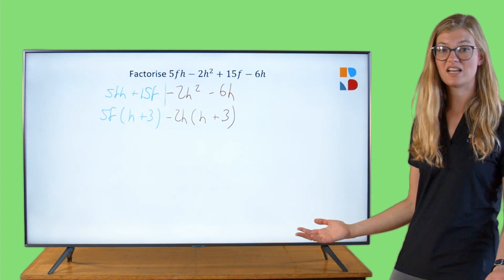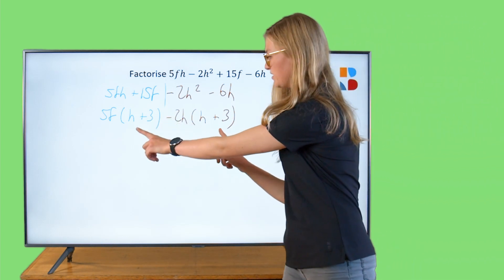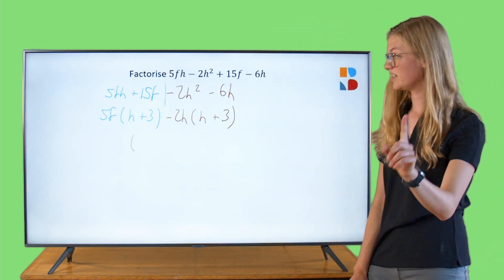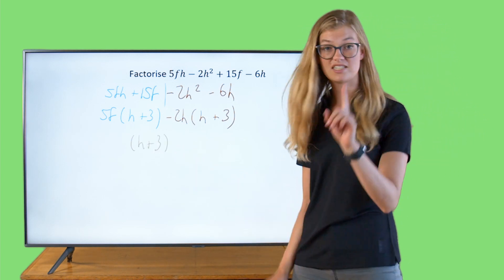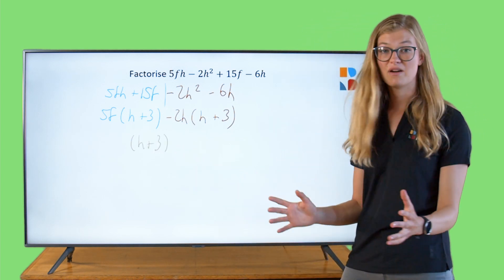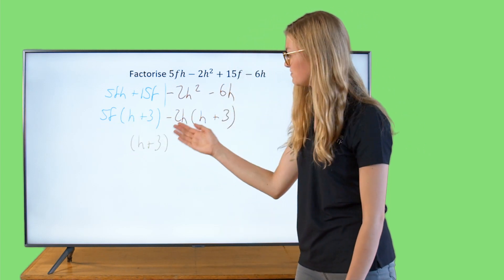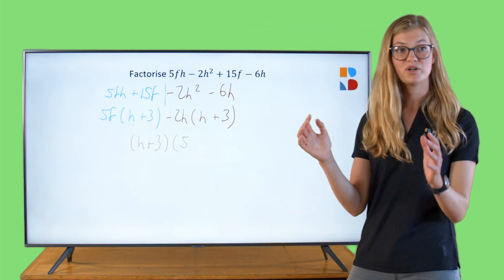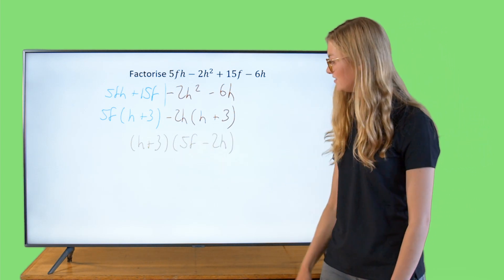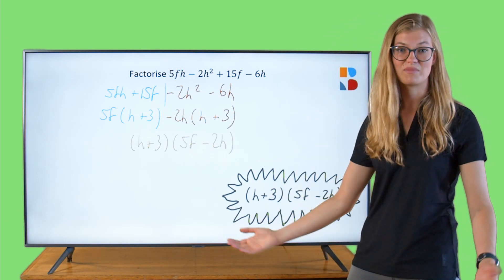What's left now? This guy's been repeated twice, so we're just gonna write him down once at the start. H plus 3 down once. Remember that. And now we're gonna take what's been left outside the brackets, this 5F and this minus 2H. We're gonna put them together into one bracket just beside this guy. And that's it. That's factorising by grouping.